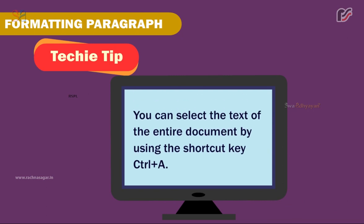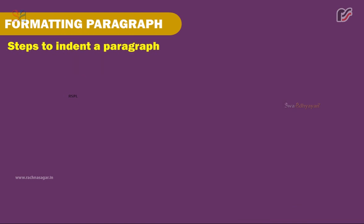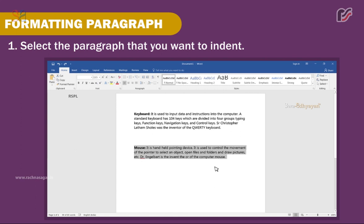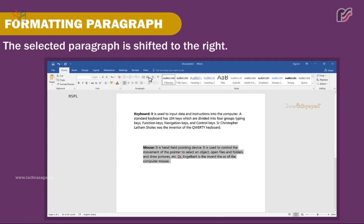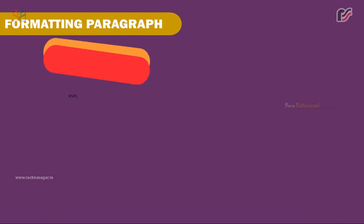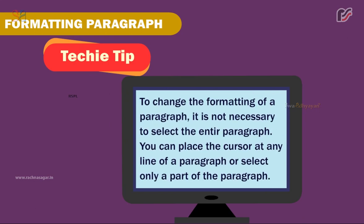You can select the text of the entire document using the shortcut key Ctrl+A. Steps to indent a paragraph: 1. Select the paragraph you want to indent. 2. Click the Increase Indent icon in the Paragraph section of the Home tab — the selected paragraph is shifted to the right. To change the formatting of a paragraph, it is not necessary to select the entire paragraph; you can place the cursor at any line or select only a part of the paragraph.